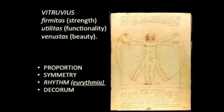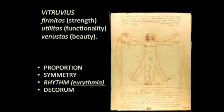For firmitas — structural integrity: if an architect is going to build something, it better not fall down. The architect should understand structures, construction, and materials to build something solid. Utilitas, functionality, means program. The architect should thoughtfully engage the question of program and make a building that accommodates it. If the program is a Roman bath, there better be water in it. If the architect has a fabulous concept for a Roman bath that doesn't involve water, the architect has failed. The architect can push the type imaginatively, but must engage function.